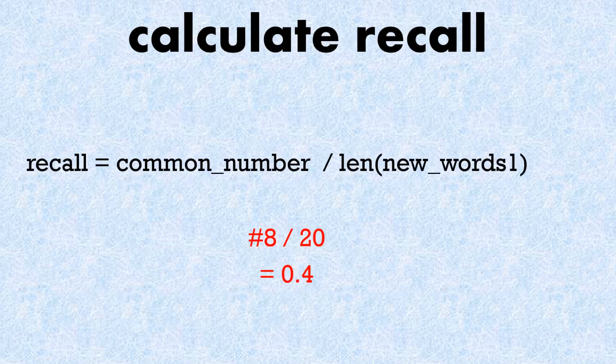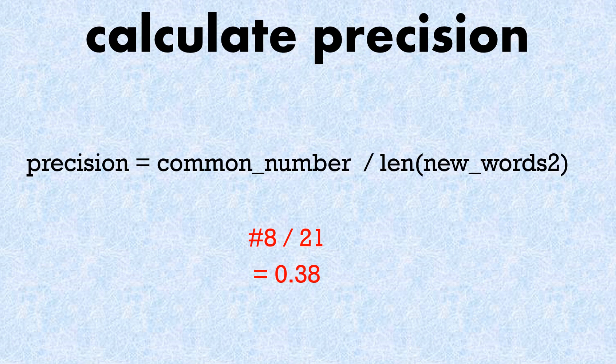So how do we calculate recall? Recall is the total number of common words - which was eight - divided by the amount of words in the first text minus stop words, which was 20. So eight divided by 20 equals 0.4 - that's our recall. Precision is the number of common words divided by the length of the second text minus stop words, which was 21 words. So eight divided by 21 is approximately 0.38 - that's our precision.